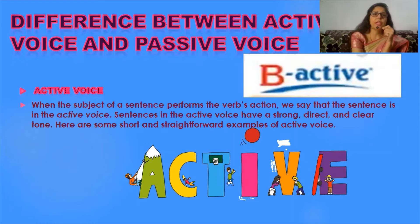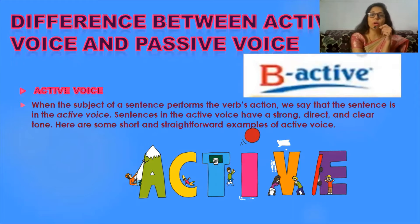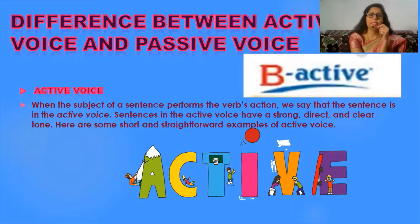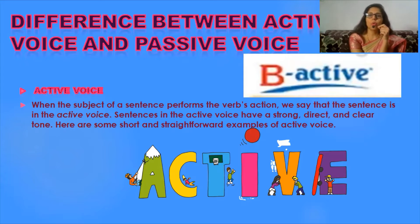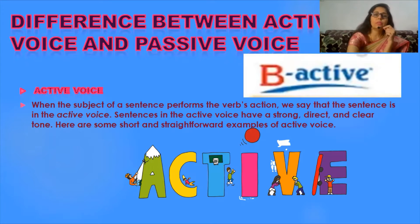Let us see the difference between active and passive voice. Active voice is when the subject of a sentence performs the verb's action — the action denoted by the verb is performed by the subject. We say a sentence is in the active voice when it starts from the subject and the verb's action is performed by that subject. Sentences in the active voice have a strong, direct, and clear tone.